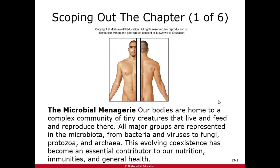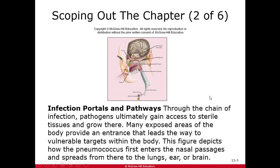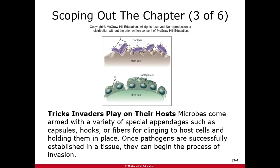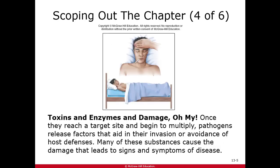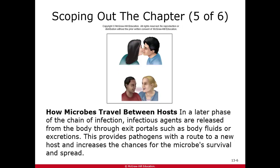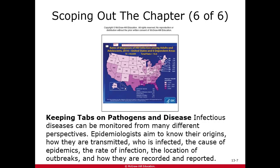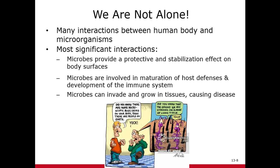This chapter is going to talk about what's called our microbial menagerie — all the organisms in your body. You're not alone. We'll cover portals of entry, their pathway once they get in, tricky things they do to take hold, toxins and enzymes they make to cause infection, how they go from host to host, and tracking different organisms in the world.